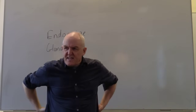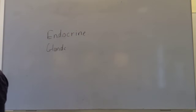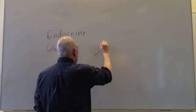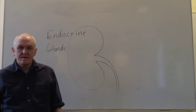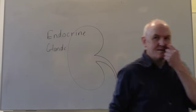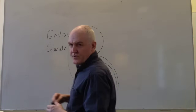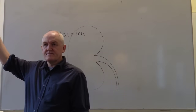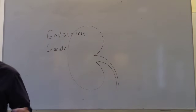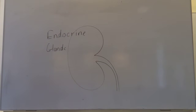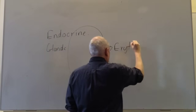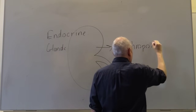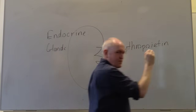Another set of organs — the kidneys. The kidneys are remarkably useful for many things, but the kidneys are also endocrine glands. The kidney produces a hormone called erythropoietin, or EPO.